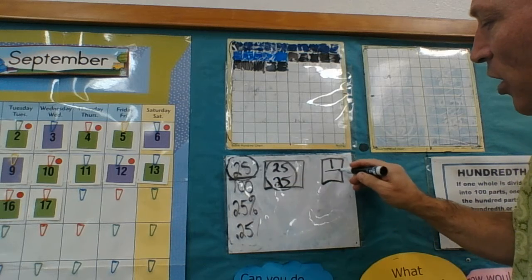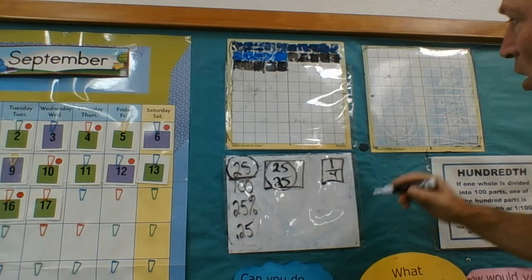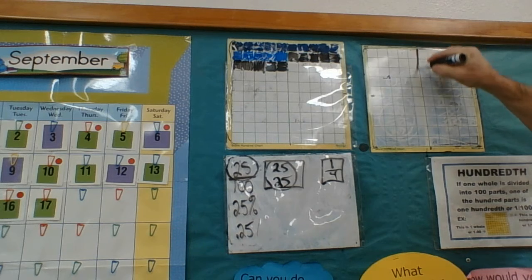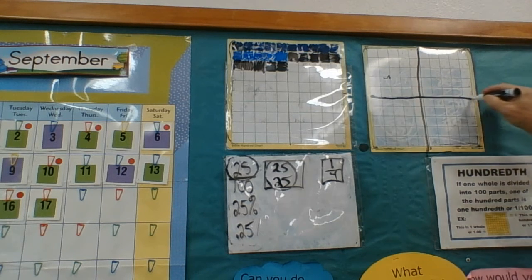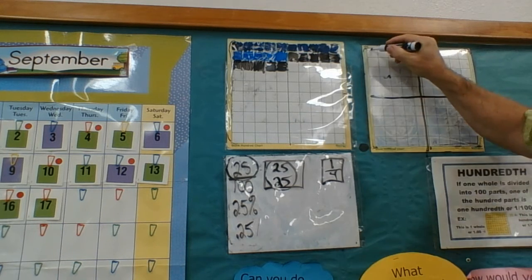and 100 divided by 25 would equal fourth. So what we're doing here is we're cutting the whole up into four. And what we have is we have one whole fourth of that.